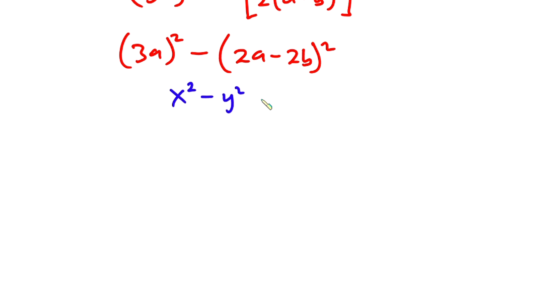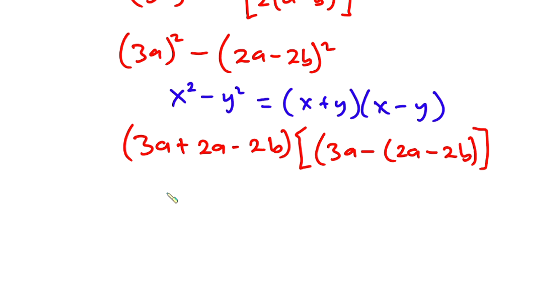So we're going to have (3a + 2a - 2b) times (3a - 2a - 2b). Simplifying the first term: 3a + 2a - 2b = 5a - 2b.